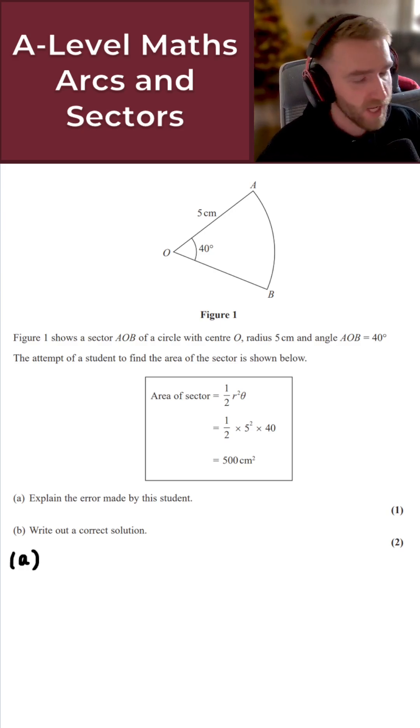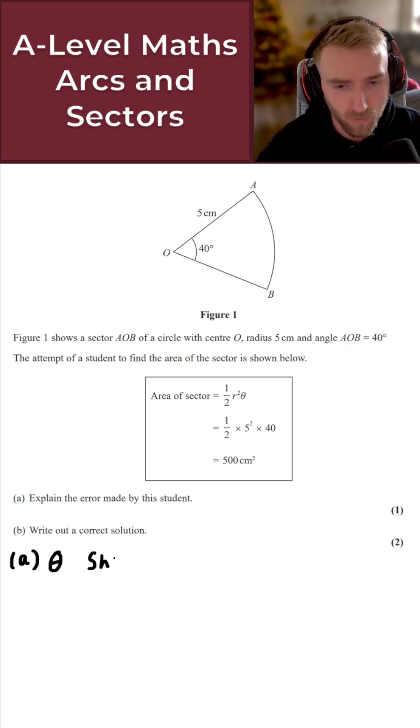Now, this student here made a significant error. The reason for that is because, basically, if you're going to use this formula here, theta should be in radians, not degrees. And as they continue to work through the question here, they've used theta in degrees, not radians. So basically, all we're going to say here then is that theta should be in radians.